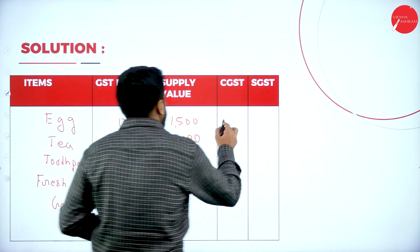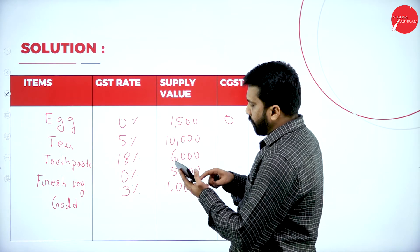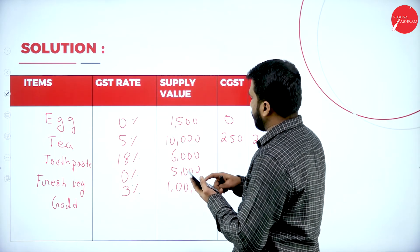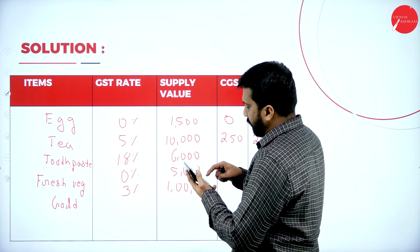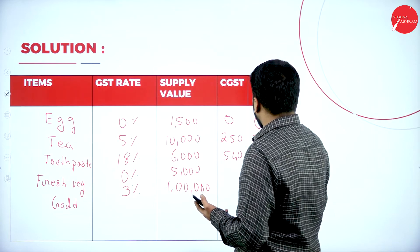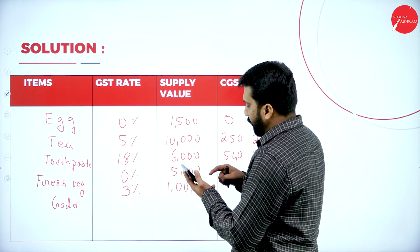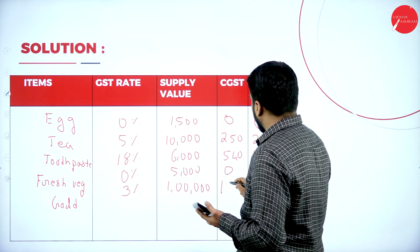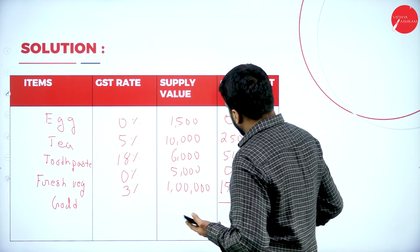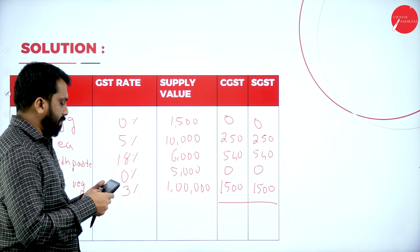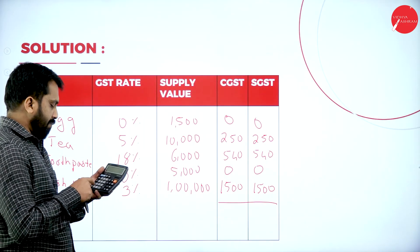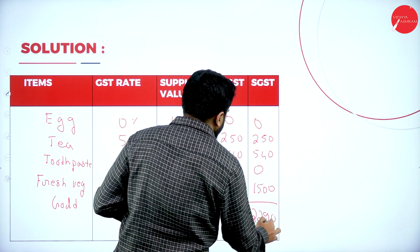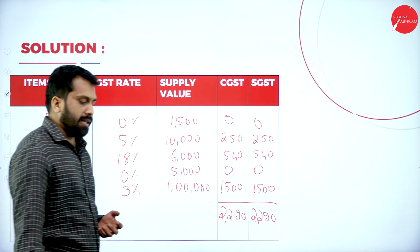Egg — zero, so no calculation. Tea — 10,000 into 5 percent divided by 2 equals ₹250 and ₹250. Toothpaste — 6,000 into 18 percent divided by 2 equals ₹540 and ₹540. Fresh vegetables — zero, nothing to calculate. Gold — 1,00,000 into 3 percent divided by 2 equals ₹1,500 and ₹1,500. Total CGST: 250 + 540 + 1,500 equals ₹2,290.